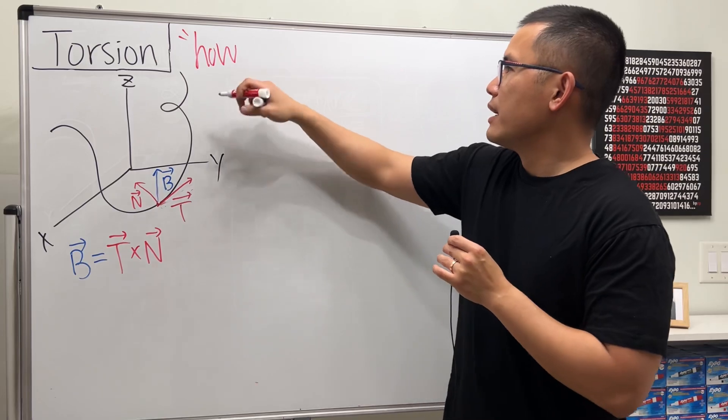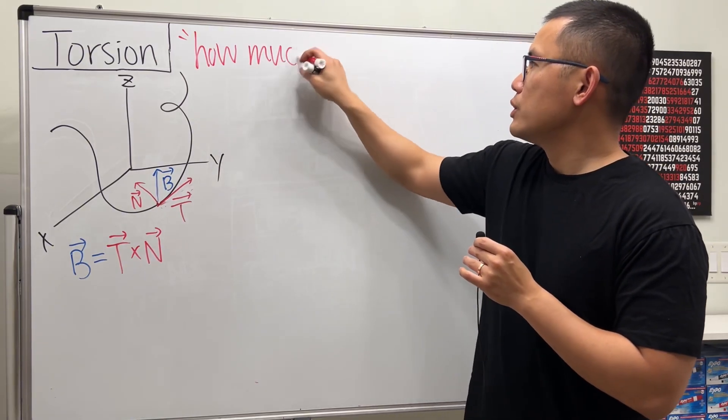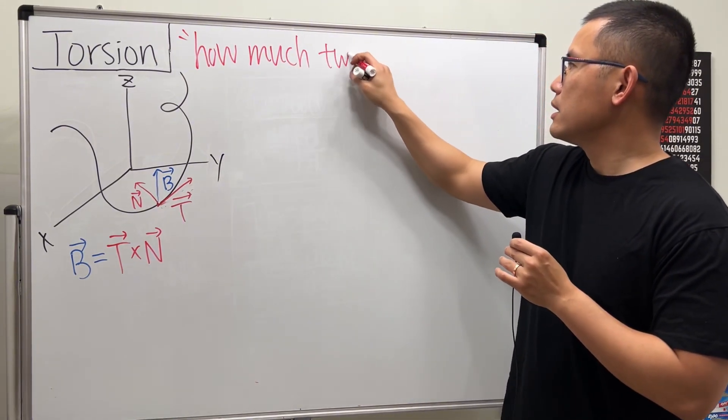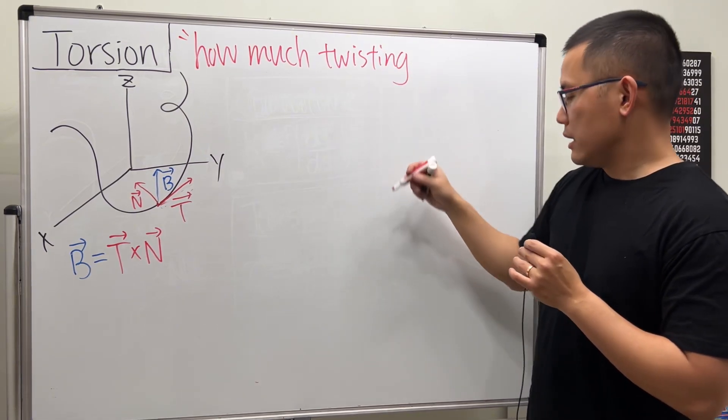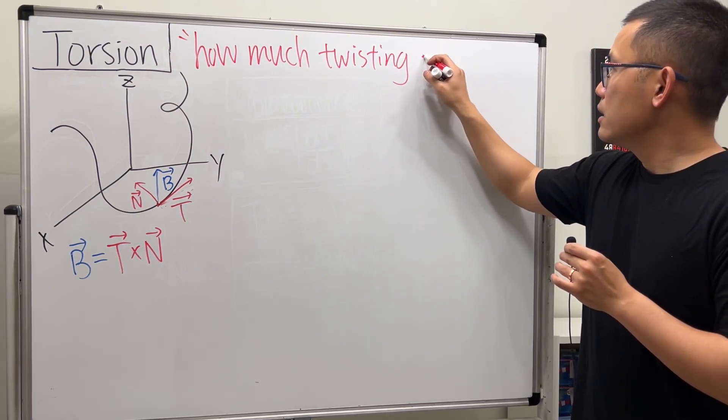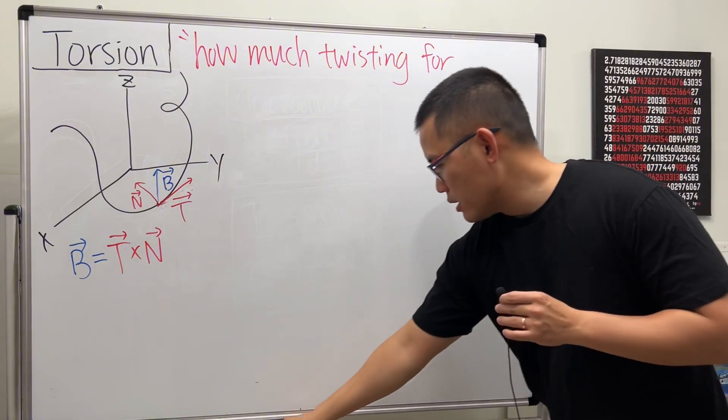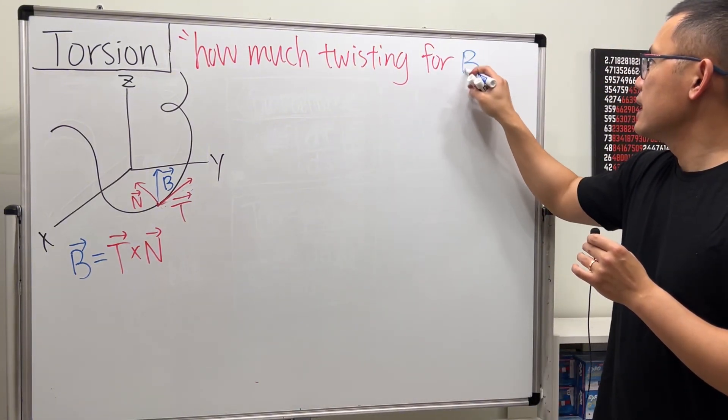So let me just write this down right here. The torsion is how much twisting that you are getting for B. That is the idea.